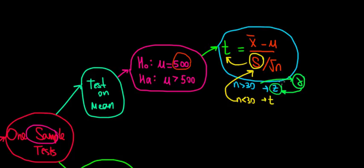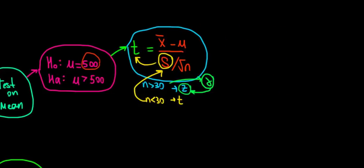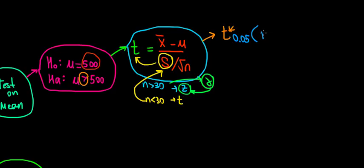The z-test is designed for large samples - we don't have degrees of freedom there because we assume the sample size is infinitely large. For small samples, we use the t-test. The critical value for a one-sample test on mean is the t-critical value. Because it's one-sided, we use the significance level alpha without dividing by two, keeping it on one tail only. So with alpha equal to 0.05, the degrees of freedom would be the number of observations minus one.